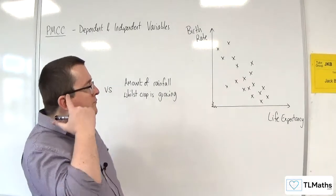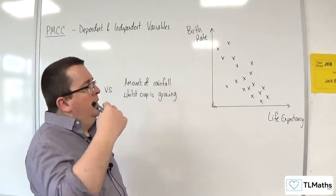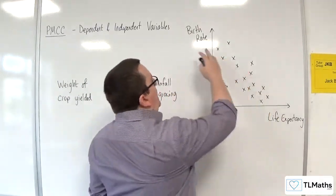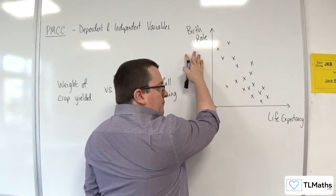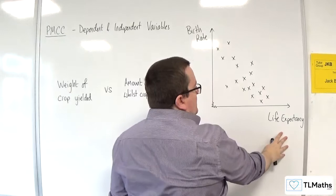Now, in this case, when we're talking about life expectancy and birth rate, do we think that the life expectancy depends on the birth rate? Or do we think that the birth rate depends on the life expectancy?